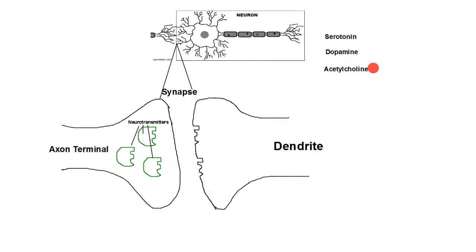The venom of a black widow works on acetylcholine. If you get bitten by a black widow, it produces a synthetic acetylcholine, which basically gives you too much acetylcholine, which then makes you seize — too much movement — which is a bad thing. So that's the way neurotransmitters work when they're actual neurotransmitters.